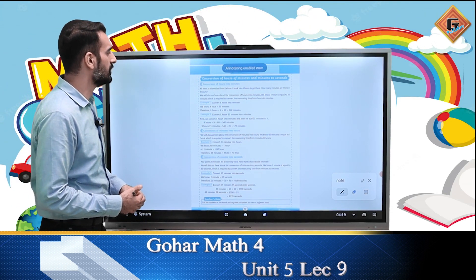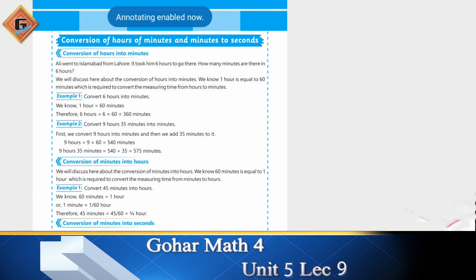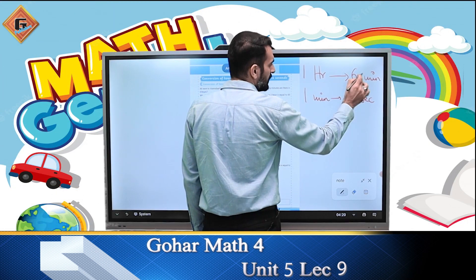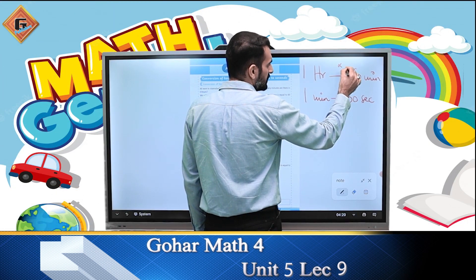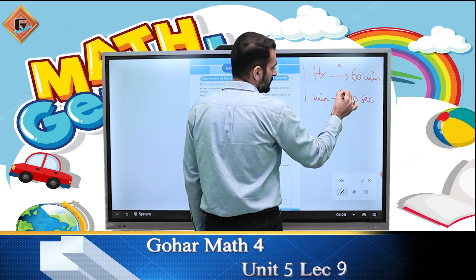तो चलते हैं अपने topic की तरफ — conversion of hours into minutes and minutes into seconds. उसके लिए जरूरी है कि हमें पता हो कि one hour में 60 minutes होते हैं और one minute में 60 seconds होते हैं। Hours से minutes में जाने के लिए हमें 60 से multiply करना है, और minutes से seconds में जाने के लिए भी हमें 60 से multiply करना होगा।